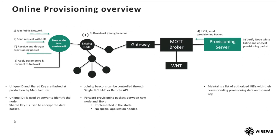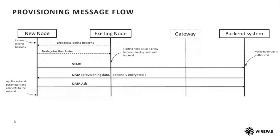This slide presents basically the same thing but with the message flow between the new node and the provisioning server. The new node joins the network and sends start packets including the unique ID to the backend system. As shown, the existing node is only there to forward packets back and forth. When the start packet is received by the provisioning server, it replies with data packets including the provisioning data. The new node responds with an acknowledgment and applies the network parameters to be able to connect to the network. The protocol is quite simple, but nothing more than that is needed to do the provisioning.